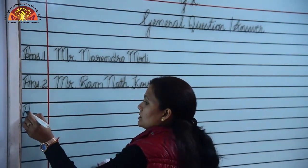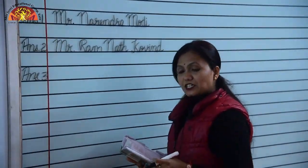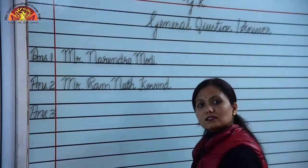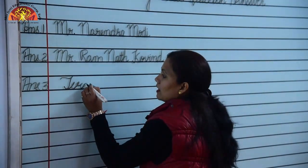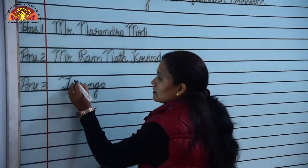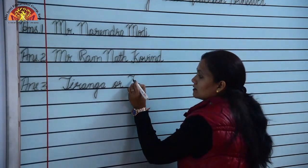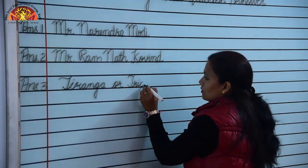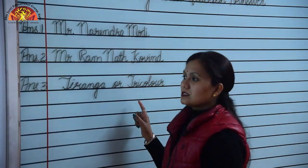Question 3: What is our national flag called? Our national flag is called Tiranga or Tricolour. Spelling of Tiranga: T-I-R-A-N-G-A. Spelling of Tricolour: T-R-I-C-O-L-O-U-R.